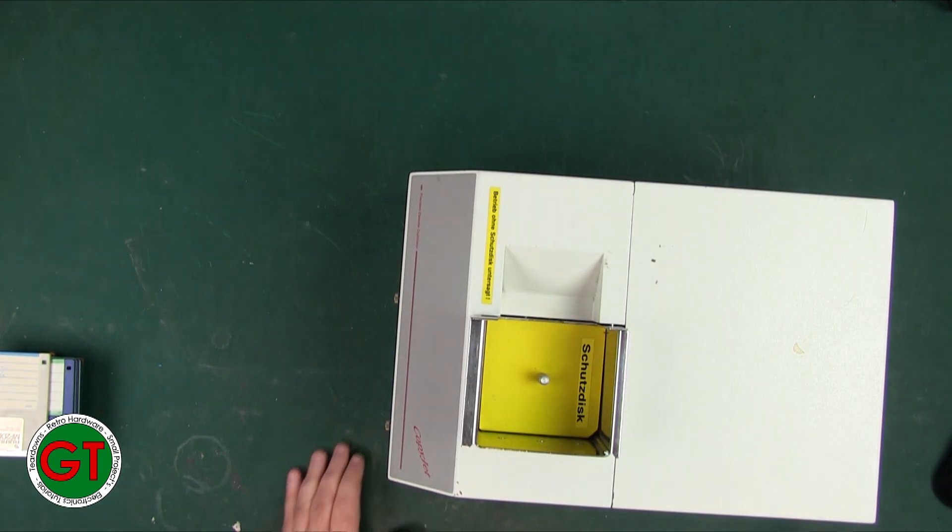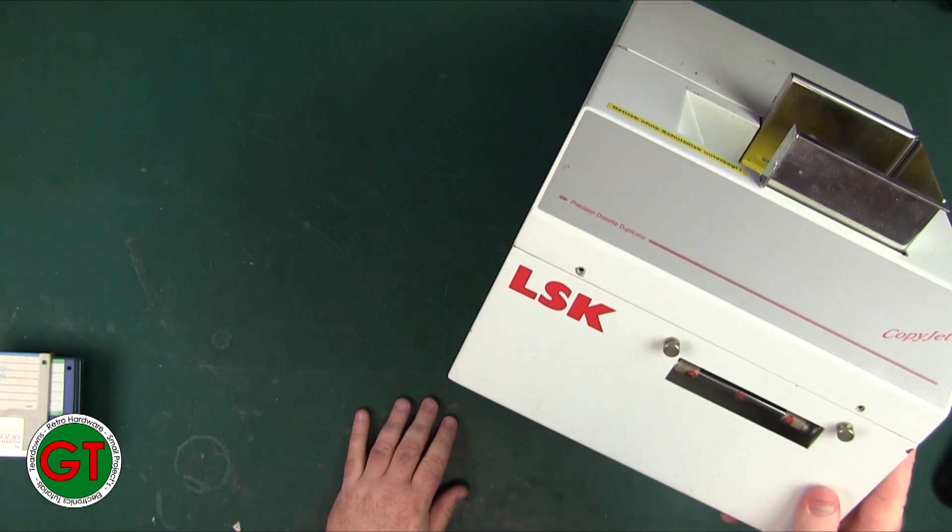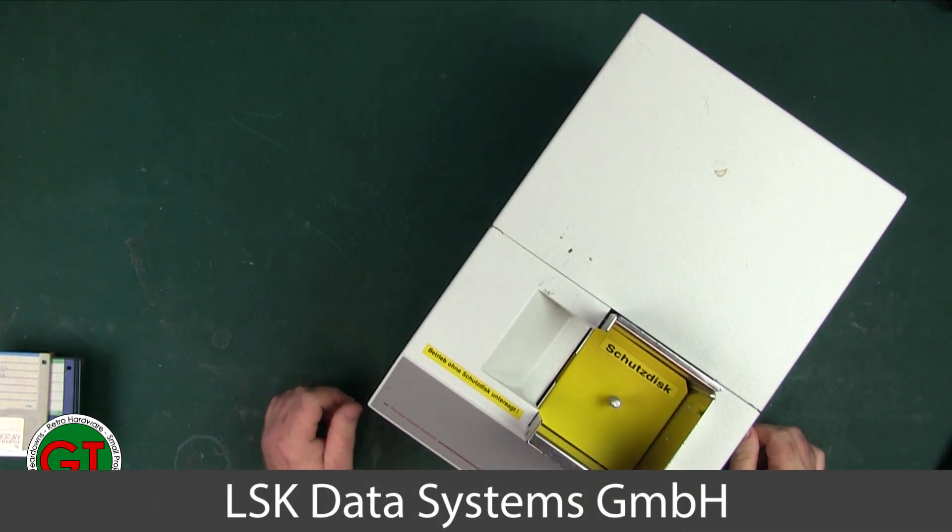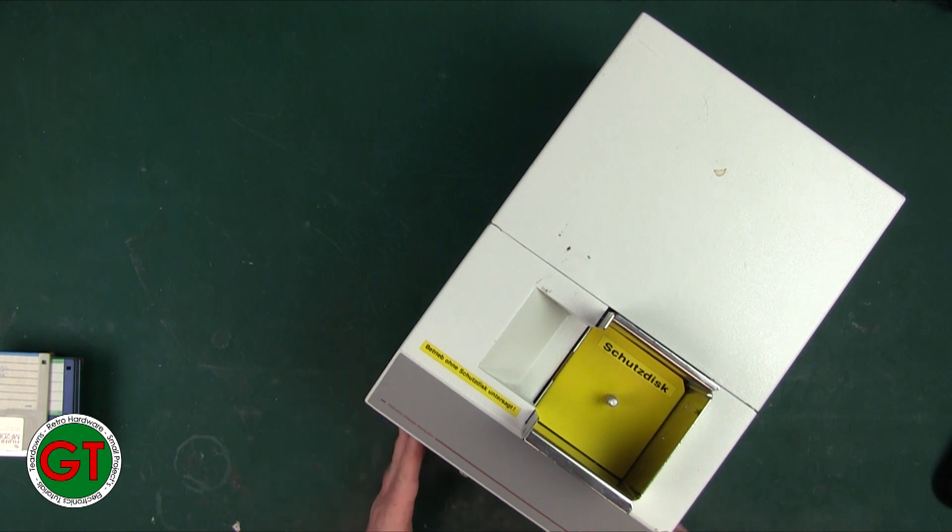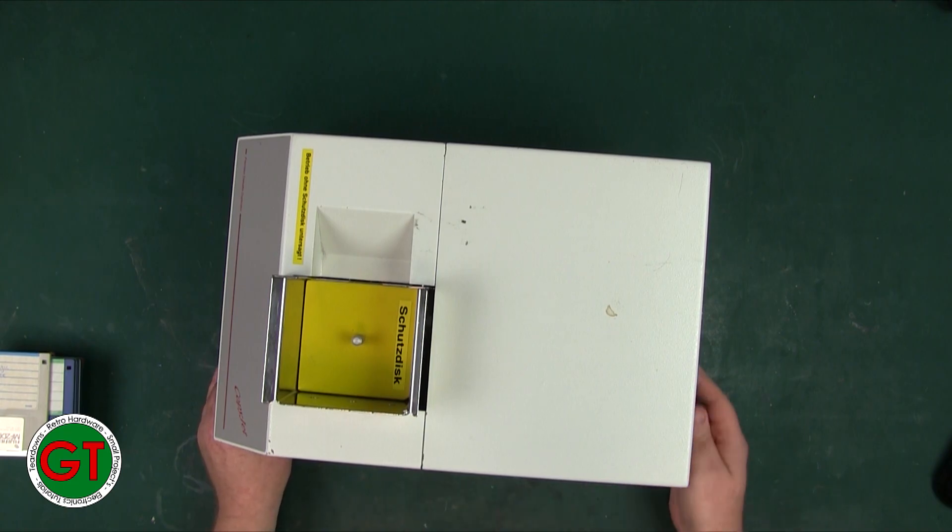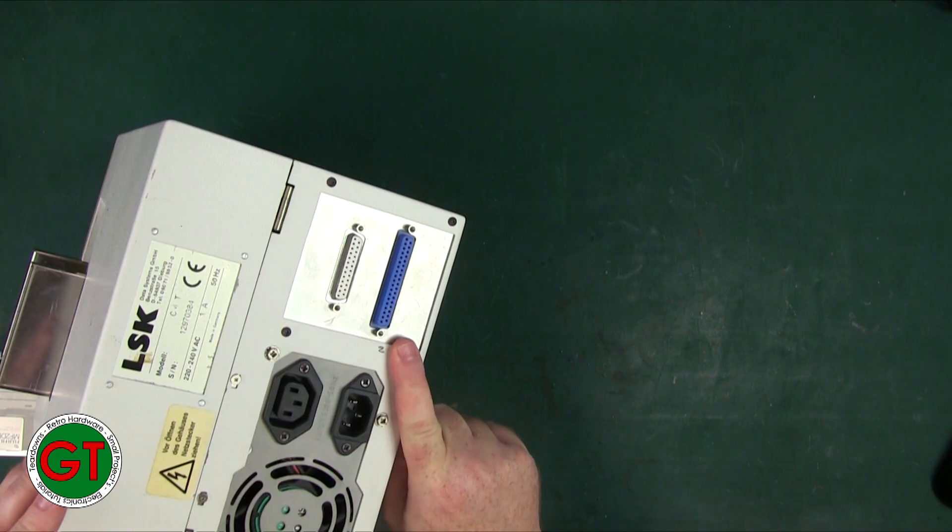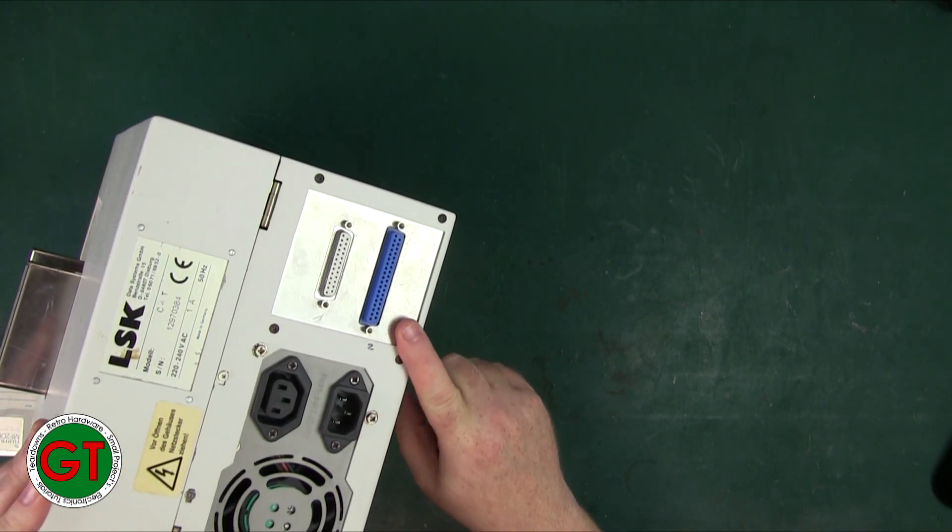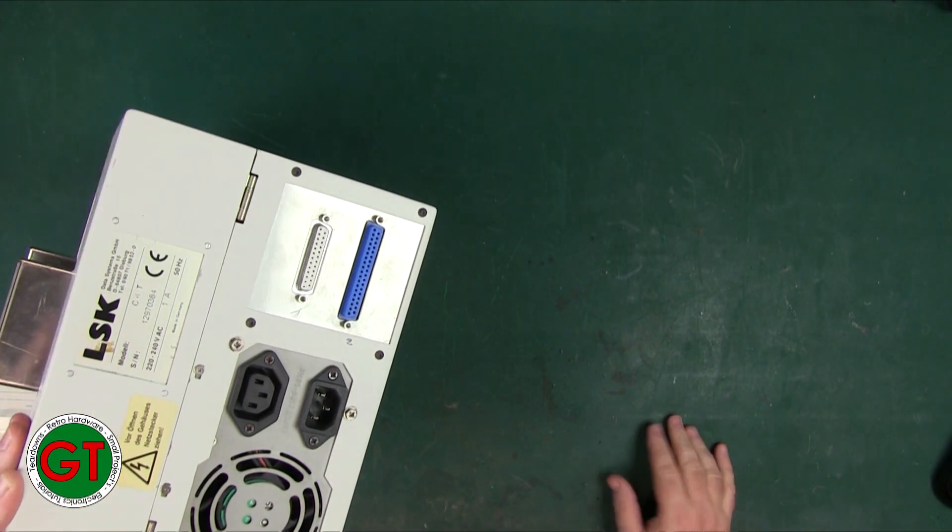Recently I came into possession of something rather interesting - and it's pretty big and pretty heavy. This is a CopyJet by a company whose initials is LSK. This is a German company and they're still in existence. This is a floppy disk duplicator machine. This is a dumb machine because literally all it is is a power supply, a mechanism, and a floppy drive. They do do another version of this which is a self-contained unit, but this one you need to control and connect to a PC.